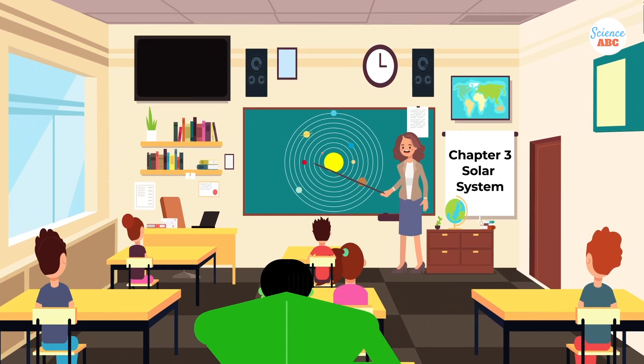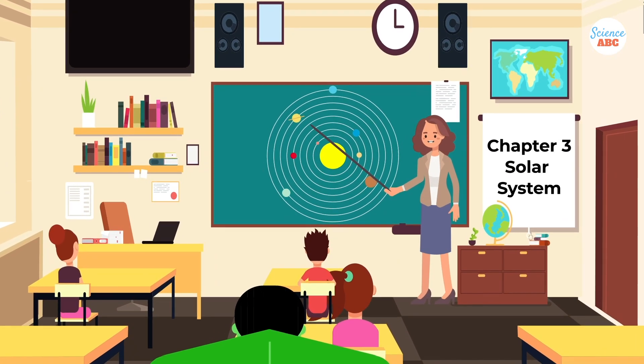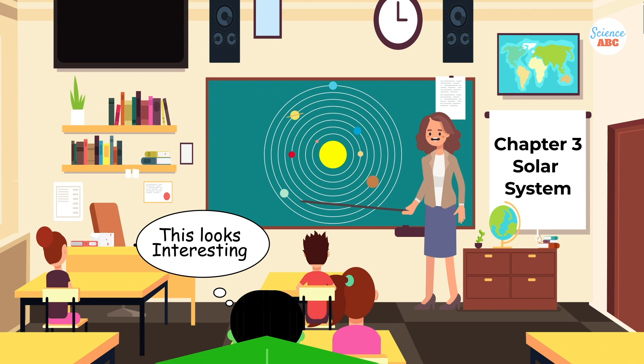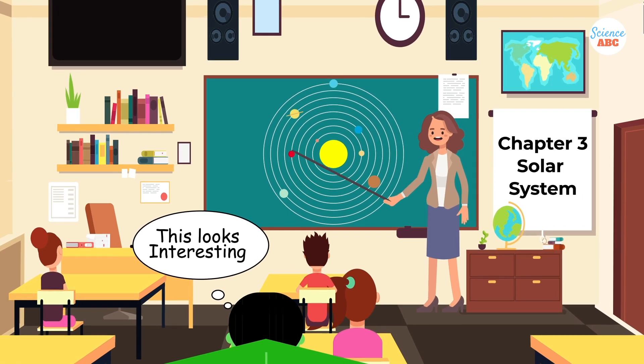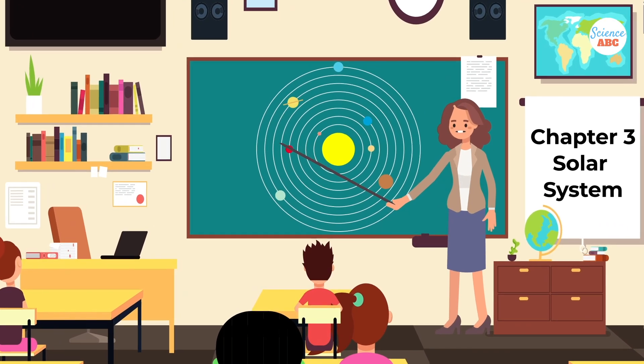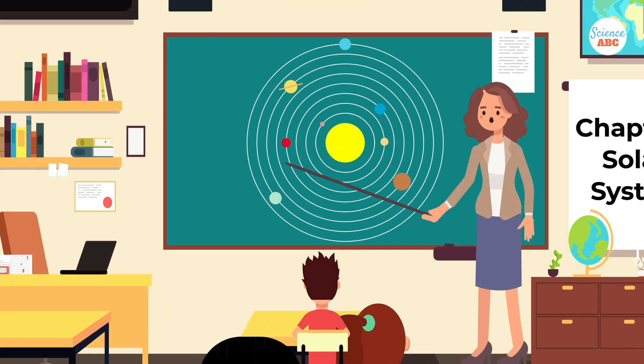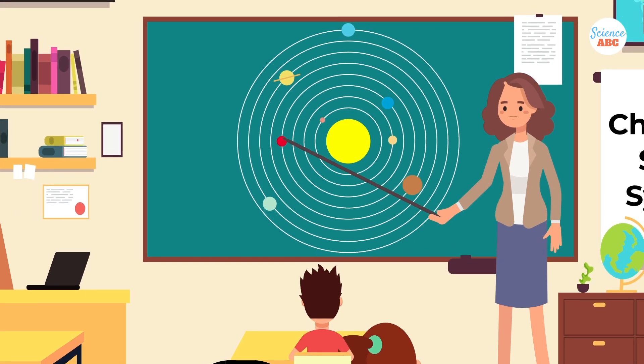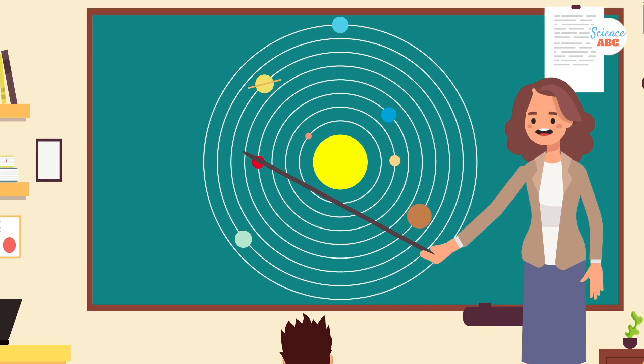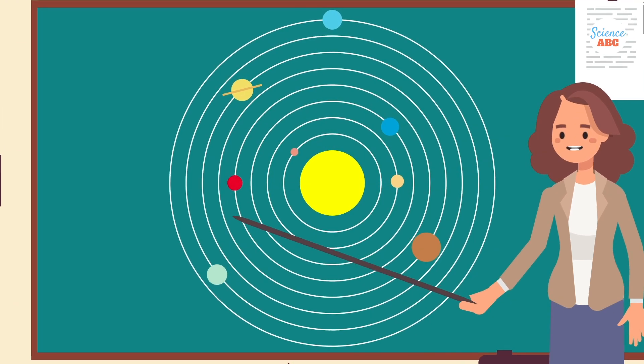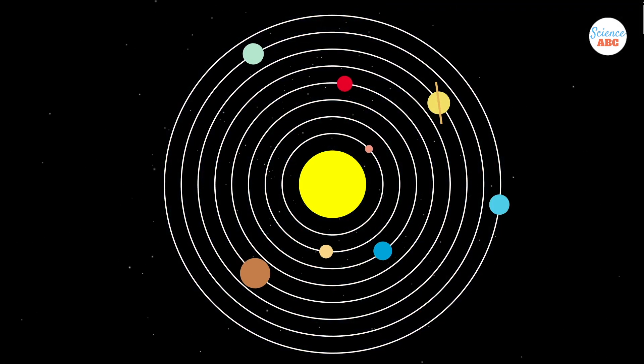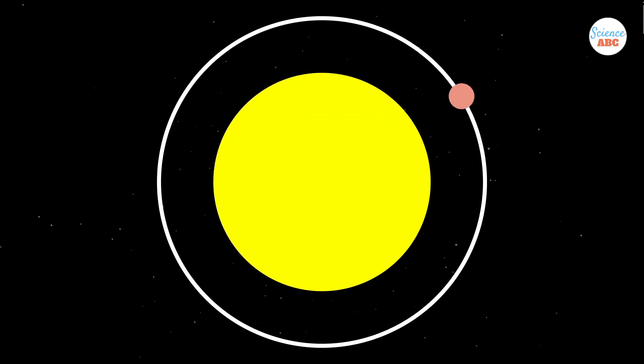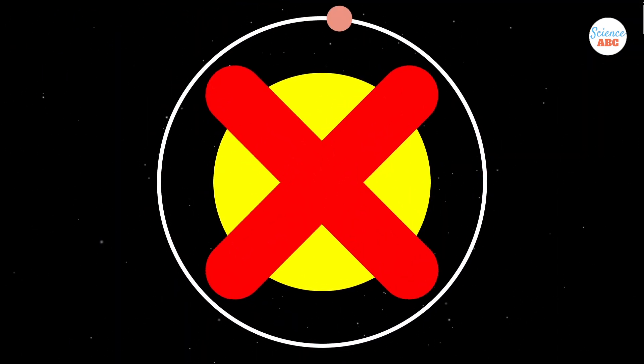We have all seen the planetary model of our solar system since back in our school days. The planets are shown to revolve in a nice circular path, forming concentric rings, with the Sun sitting smack dab in the center. While this vision looks neat and tidy for a school project, in reality things aren't that simple. The planets in our solar system don't really revolve in perfectly circular orbits.